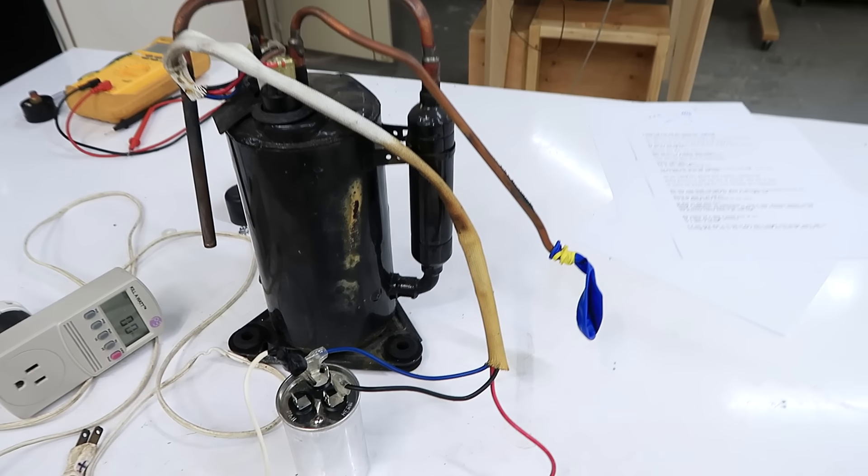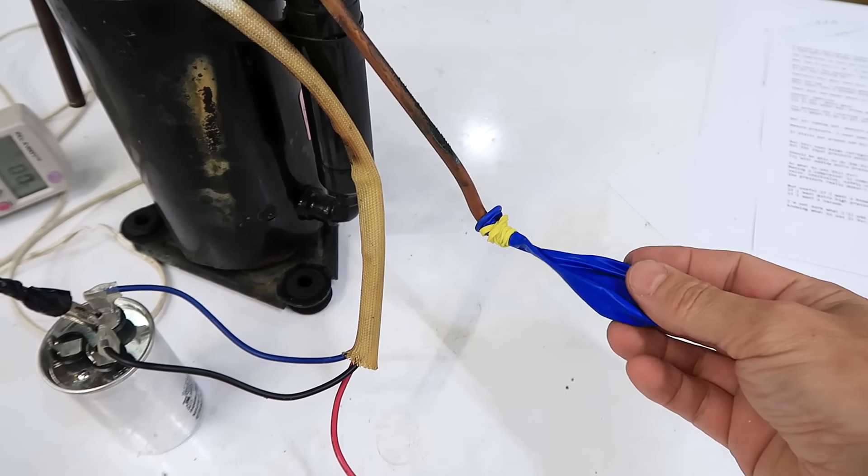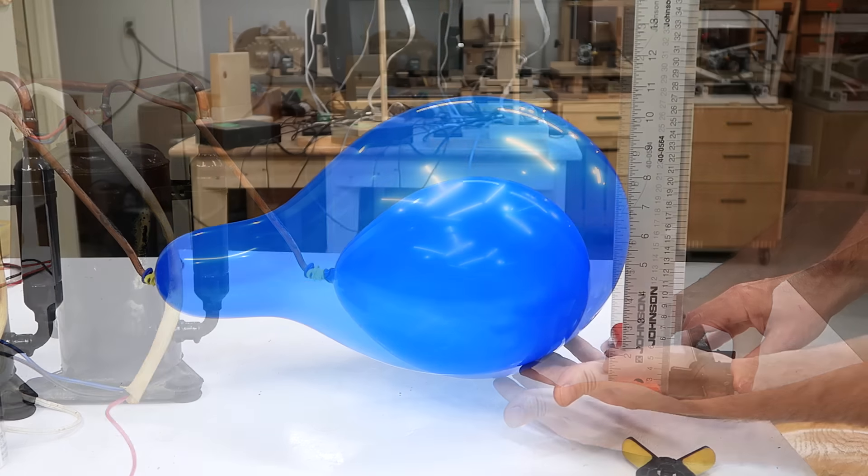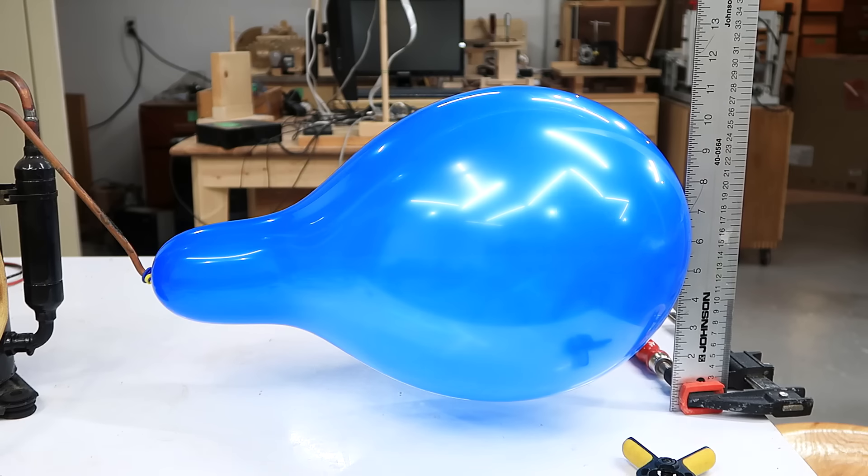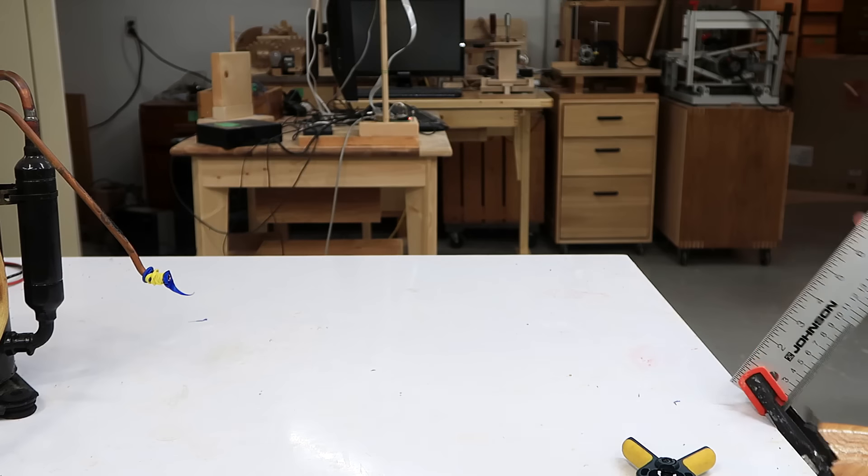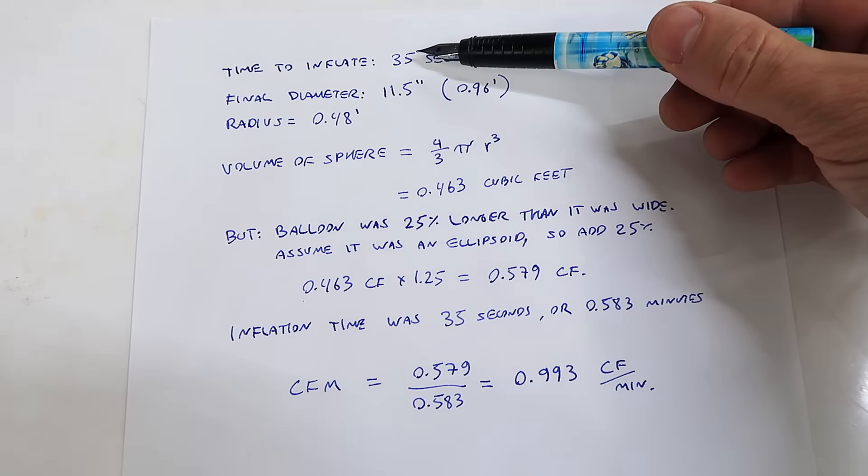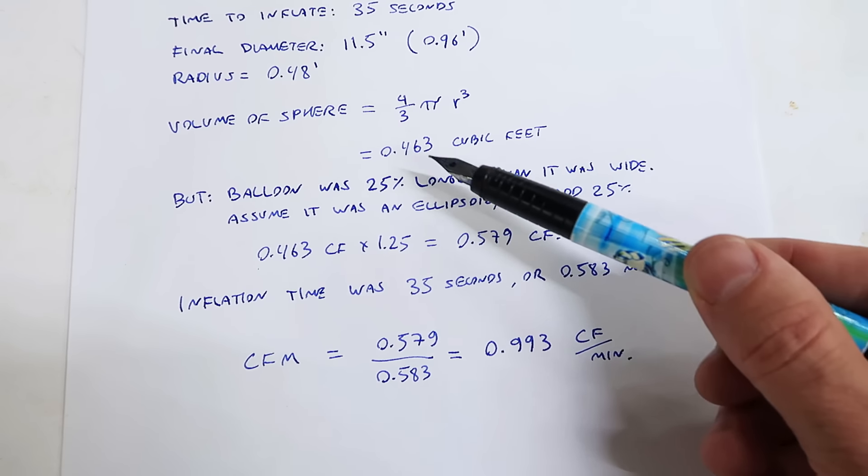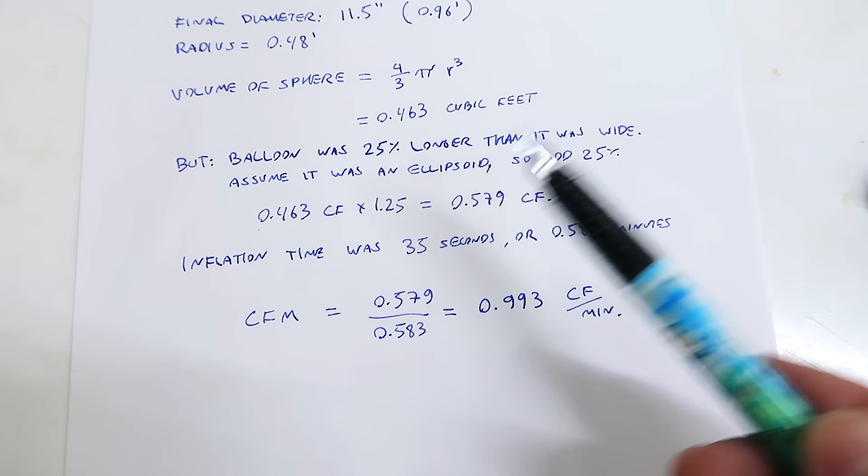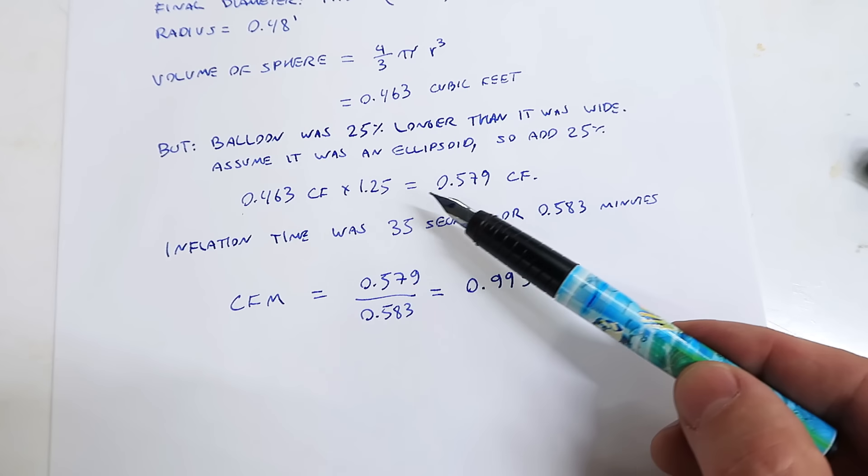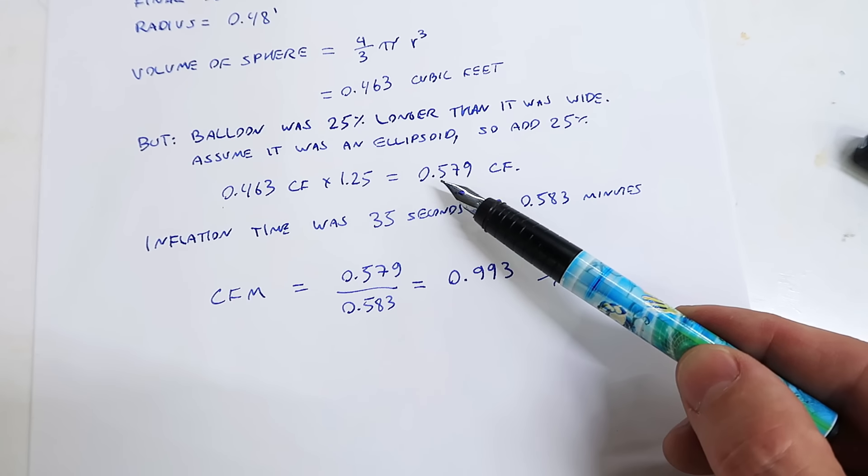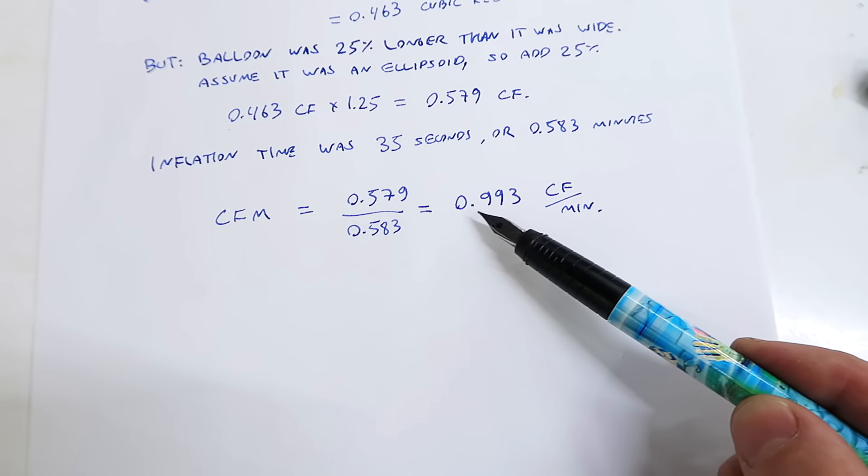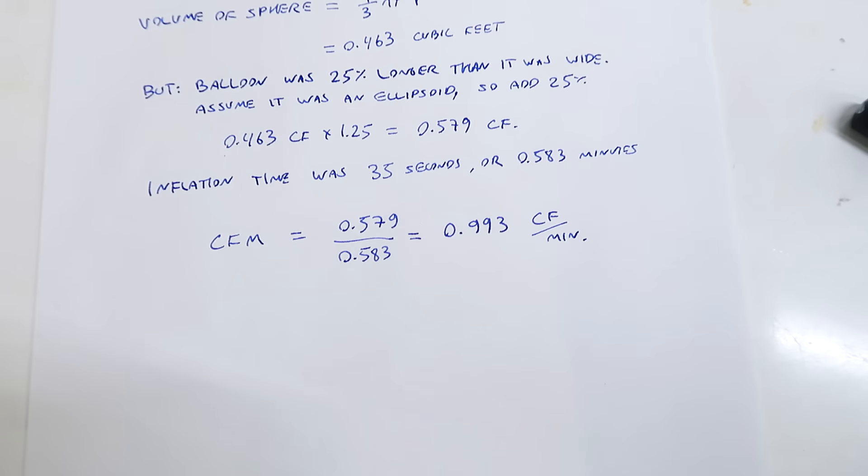I'm gonna measure how much volume this pumps. I put a balloon here on the output and let's just film that getting inflated. Time to inflate was 35 seconds to 11 and a half inches diameter. I worked that out, that's a sphere of 0.463 cubic feet, but it was a strut sphere, so add 25% because it was longer, 0.579 cubic feet. Divide that by the number of minutes that it took and we're very close to 1 CFM output.